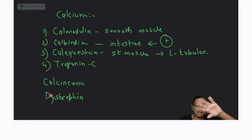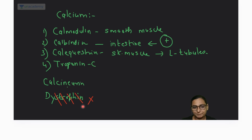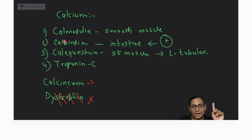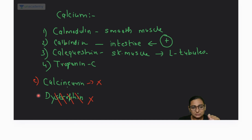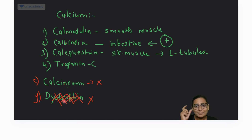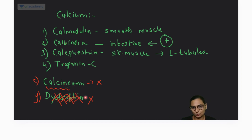Out of calcineurin and dystrophin, 100% dystrophin is the wrong answer — it is not a calcium binding protein at all. However, calcineurin is directly or indirectly related to calcium. So if both calcineurin and dystrophin are options, please rule out dystrophin. If only calcineurin is an option, rule out calcineurin.